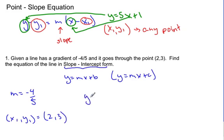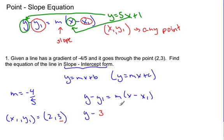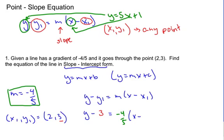I'm going to take this information and plug it into the point-slope equation: y minus y₁ equals m(x minus x₁). I'll substitute in the values. So it's y minus 3, and that equals my slope of negative 4/5, times x minus x₁, which is 2. So now I have an equation with a fraction in it.